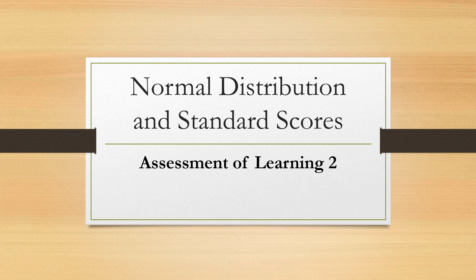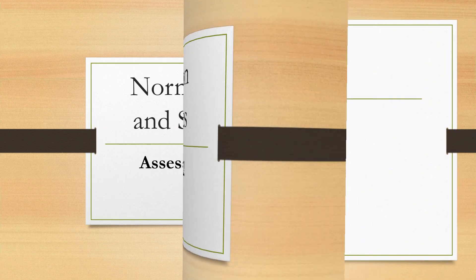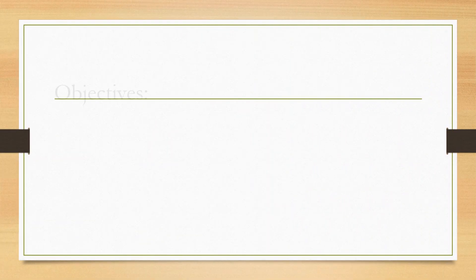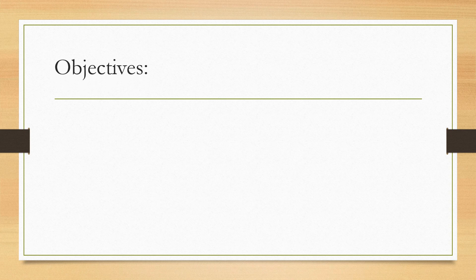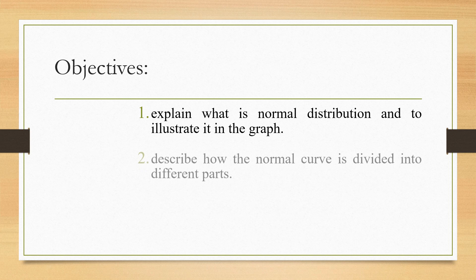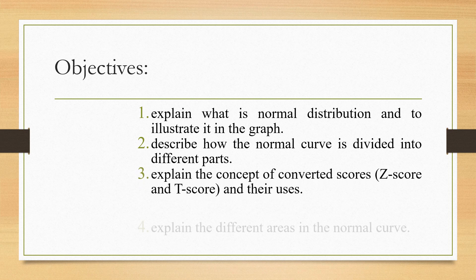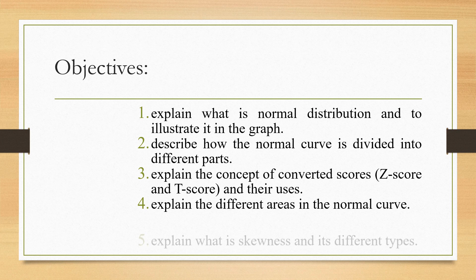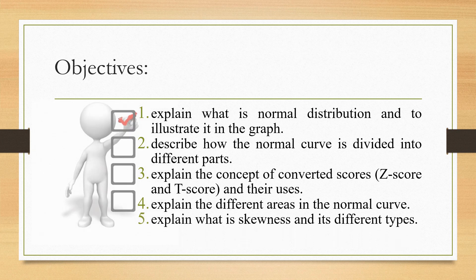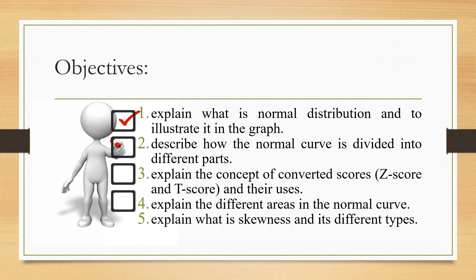After watching and studying this topic, you should be able to explain what is Normal Distribution and illustrate it in the graph, describe how the normal curve is divided into different parts, explain the concept of converted scores, Z-score and T-score and their uses, explain the different areas in the normal curve, and lastly, explain what is kurtosis and its different types.